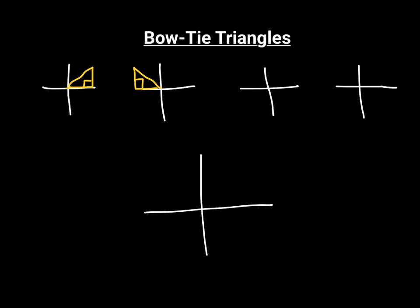If we go in the third quadrant, you go diagonally out and connect up to the x-axis. We're always connecting to the x-axis, not the y-axis. And in the fourth quadrant, if we want to make a triangle, we go diagonally out and again connect to the x-axis. The reason they're called bowtie triangles is because if you took each of these triangles and put them on the same set of axes, they look like a bowtie.